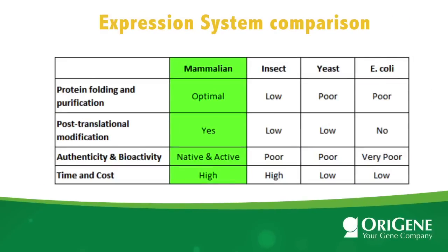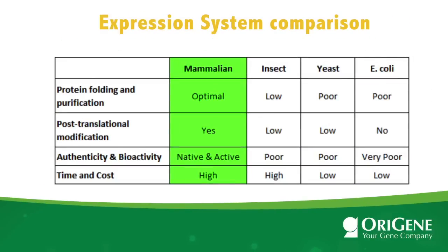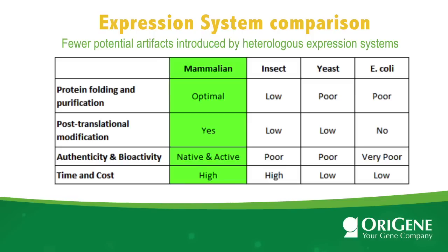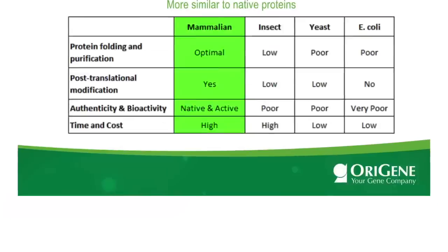But for the functional study of human proteins, mammalian cells are definitely the system of choice. With fewer potential artifacts introduced by heterologous expression systems, mammalian-produced proteins are more similar to native proteins, and the experimental data generated with mammalian cell-produced proteins is far more relevant for biology.